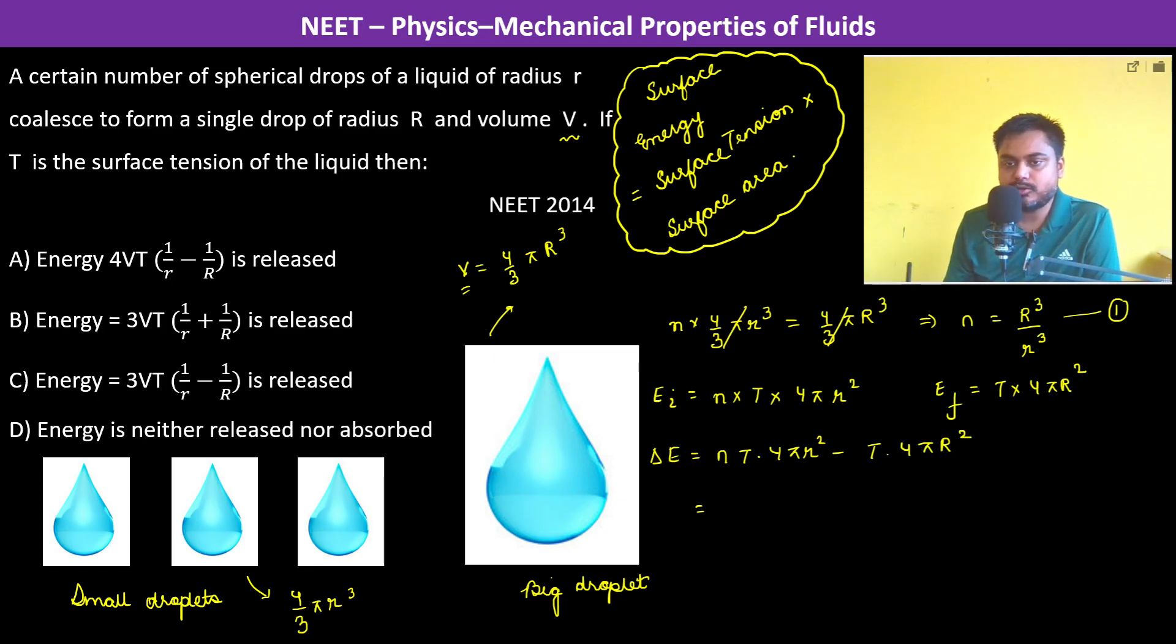N is R cube by small r cube. Therefore it is R cube by small r cube into T into 4 pi r square minus T into 4 pi capital R square. Now this r square is gone.